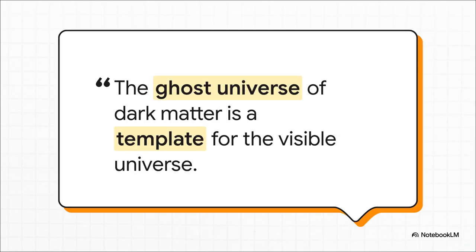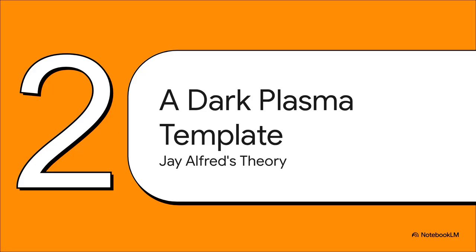This quote from UC Berkeley's Chung Pei Ma just captures this paradigm-shifting idea so perfectly. What if everything we see is just tracing the outline of something we can't see? What if there's an invisible blueprint—a template that was there first, setting the stage for everything else? And that is exactly where J. Alfred's theory comes in. He proposes that these aren't separate puzzles we have to solve one by one. He argues they are all just different symptoms of a single underlying physical reality—a universe that is shaped and governed by dark plasma.